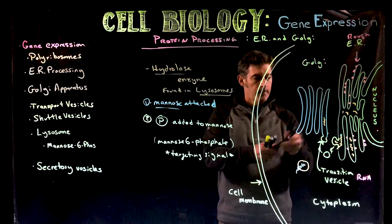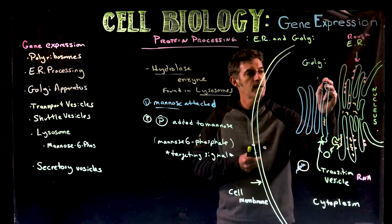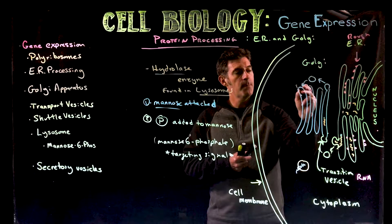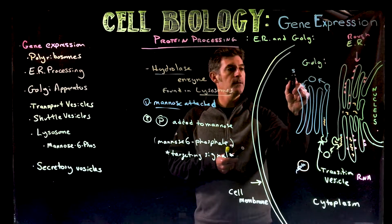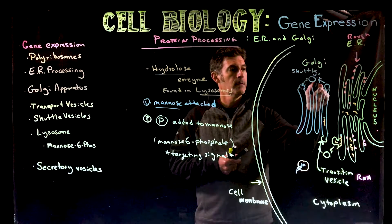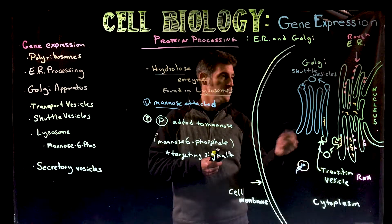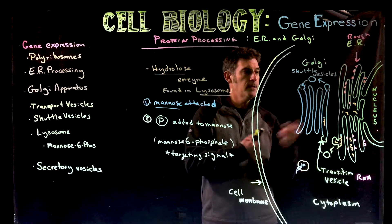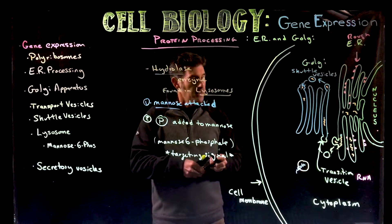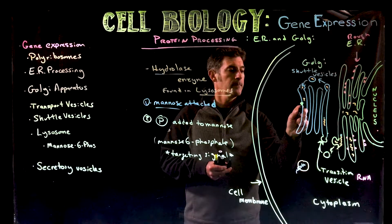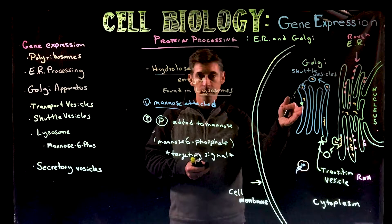What's going to happen now is that enzyme can be packaged up and moved — more budding — and the buds can come off and move to other parts of the Golgi. The vesicles that move between Golgi sacs are called shuttle vesicles. So we have transition vesicles between ER and Golgi, and shuttle vesicles between the Golgi sacs. Our protein has been moved into a vesicle and shuttled to another sac, because in that particular Golgi sac there is a receptor in the membrane that binds to mannose-6-phosphate.